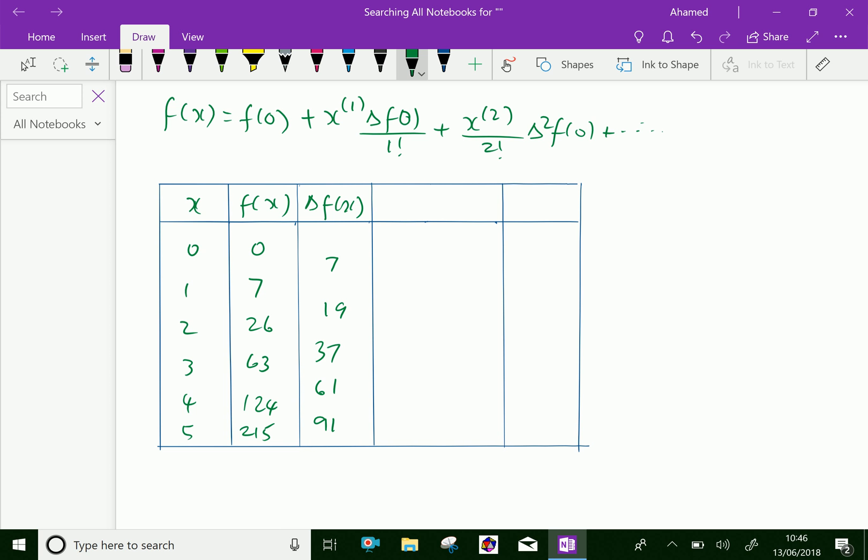Then second difference delta square f of x equal 19 minus 7 is 12. 37 minus 19 is 18. 61 minus 37 is 24 and 91 minus 61 is 30.